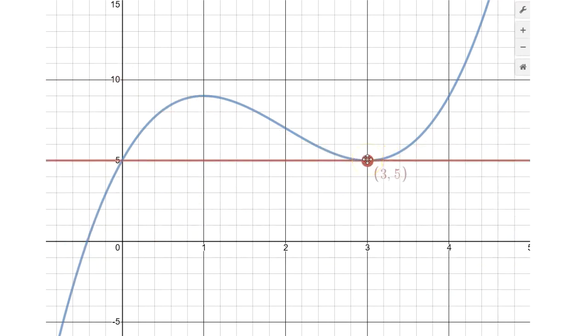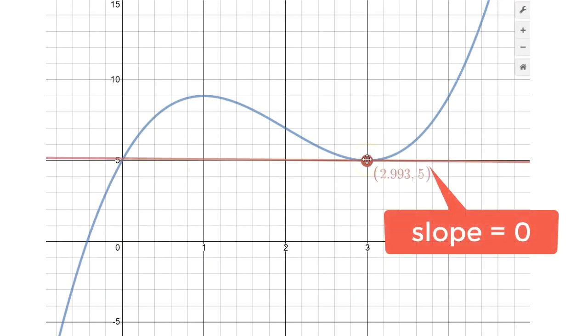And that switch again happened at this location which is the point three comma five where the slope of that tangent line is yet again zero.